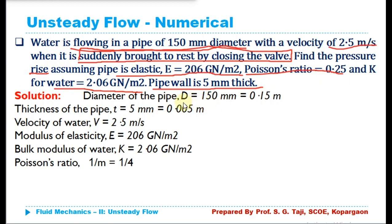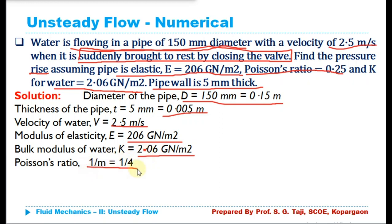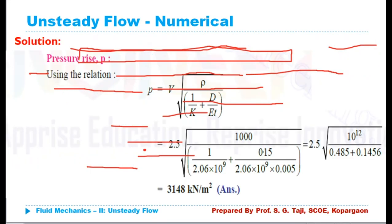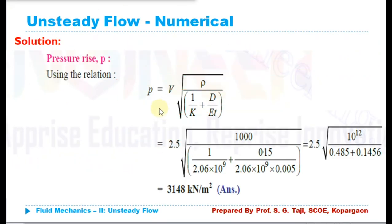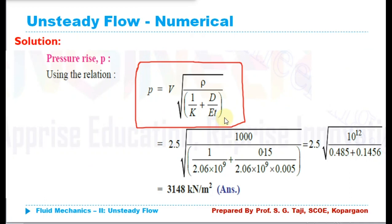Write down the given data: d = 0.15 m, thickness t = 0.005 m, velocity V = 2.5 m/s, modulus of elasticity E = 206 giga newton per meter square, bulk modulus K = 2.06 giga newton per meter square, Poisson's ratio = 0.25. For instantaneous closure with an elastic pipe, the pressure intensity equation is P = V × √(ρ / (1/K + d/(Et))), where K is bulk modulus of water, E is modulus of elasticity of pipe material, t is thickness, d is diameter, and V is velocity of flow.